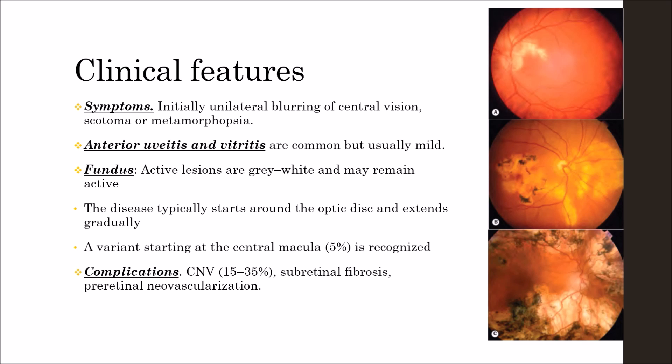These lesions are quite prominent, as shown in the first figure. This is an active lesion in early disease. The disease typically starts around the optic disc and extends gradually, though a variant starting at the central macula is recognized in 5% of cases.